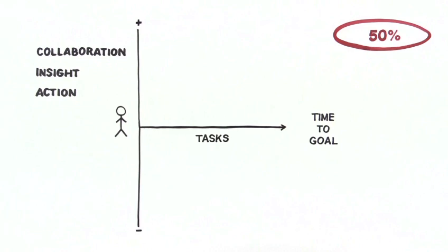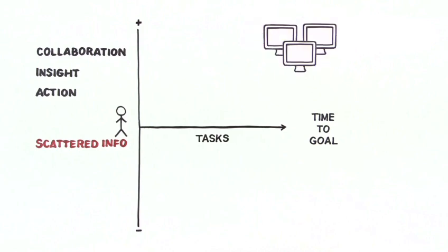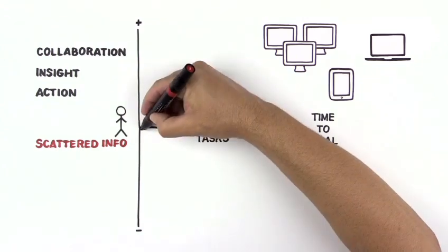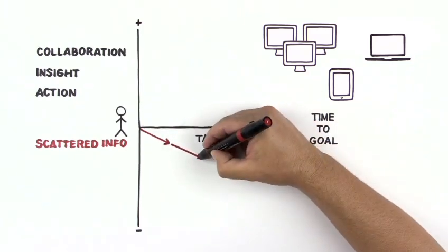Our customers speak of three big challenges that drain productivity from their team. The first challenge is scattered information. It's literally everywhere – in multiple applications, in notebooks, in spreadsheets, on someone's iPad. Teams spend time and energy trying to find the information they need.